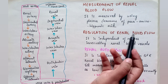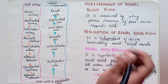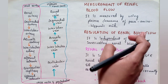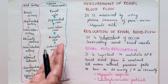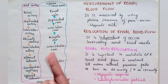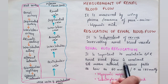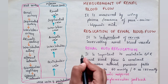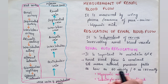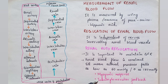Regulation of renal blood flow: renal blood flow is independent of the nerves innervating renal blood vessels — meaning nerves are not responsible for its regulation. Instead, renal blood flow is managed by renal autoregulation, which is important to maintain the filtration rate. Renal blood flow remains constant as long as mean arterial pressure stays between 60 mmHg and 180 mmHg. There are two mechanisms: myogenic response and tubuloglomerular feedback.